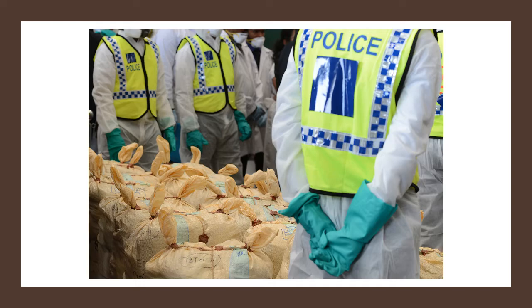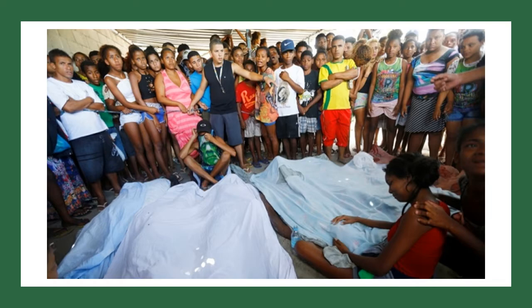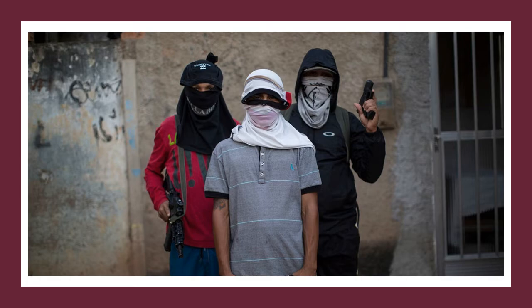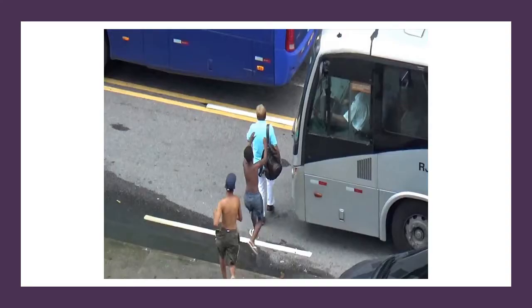For many years, the police have been trying to fight gangs to prevent drug trafficking, which led to many people dying with an average of one death per day. Barbosa described citizens' relationship with police as: 'While living under the control of heavily armed drug dealers was undesirable, few felt any allegiance to the police, whom they knew from violent, spasmodic incursions that left bodies in their wake.' During the mega events, there were numerous crime incidents including armed robberies, muggings and shootings with two fatal victims, many of which were undermined by Ryan Lochte's fabrication story.